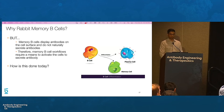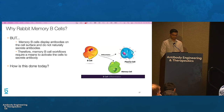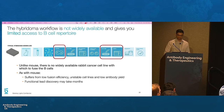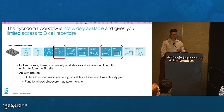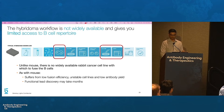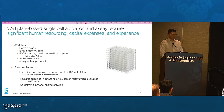One major challenge with memory B-cells is that they don't secrete antibodies, which makes it difficult to screen antibodies they produce. While hybridoma is the workhorse method for mouse antibodies, this workflow requires cancer cell lines to immortalize the antibody-secreting cells. These cancer cell lines are widely available for mice, but not so widely available for rabbits, and similar to mouse workflows, rabbit hybridoma methods suffer from low fusion efficiency, which again limits B-cell diversity.